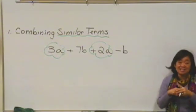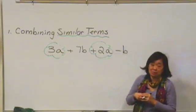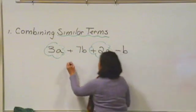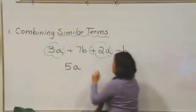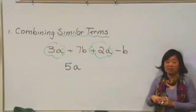One of the ways I like to think about this is like you're in the grocery store. For example, if you have three apples and then you add two apples to your basket, in the end you're going to have five apples. So to combine those similar terms, we have 3a plus 2a and we get 5a.